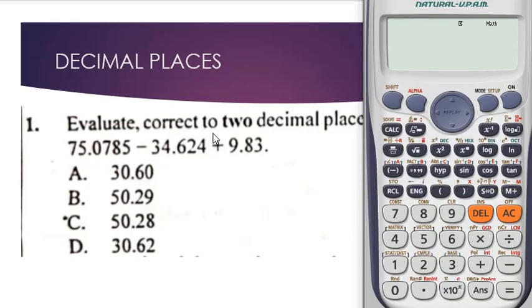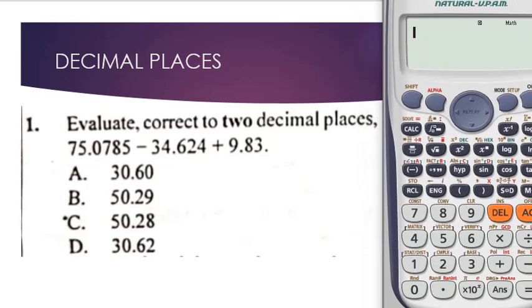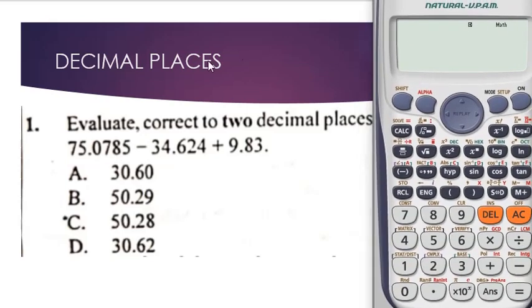The first question requires us to evaluate an expression to two decimal places. We have to evaluate, correct to two decimal places: 75.0785 minus 34.624 plus 9.83. This is a decimal places question, so let's see how to solve it.